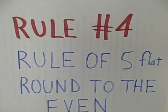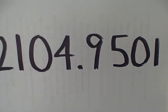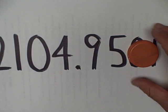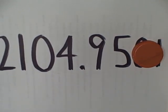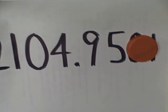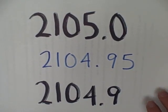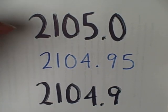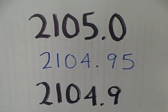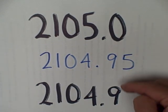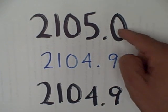Rule number four is called the rule of five-flat. Here the rule is that we go up half the time and down half the time — we always round to the even. So suppose we just had two thousand one hundred and four point nine five, with no digits after. We're right in the middle, so because the ones digit four is even and five is odd, we round up in this particular case.